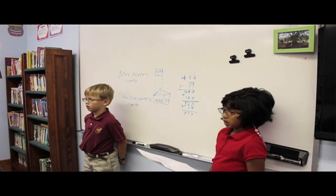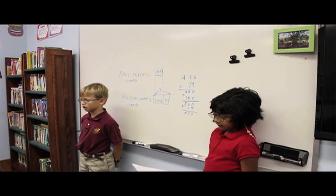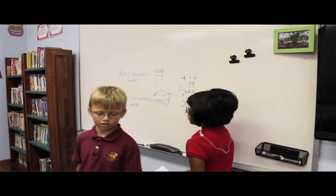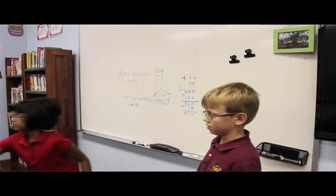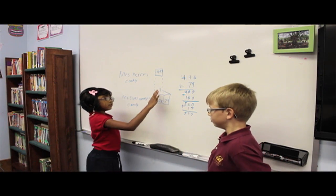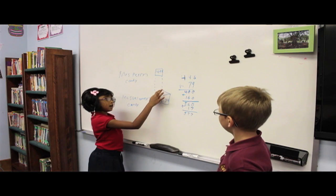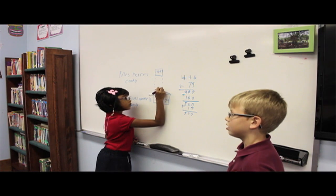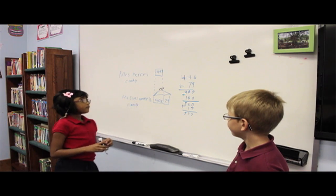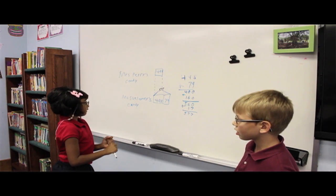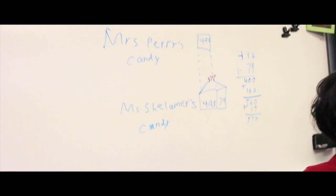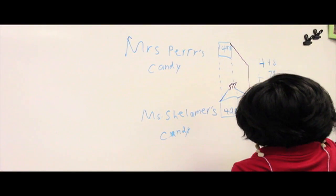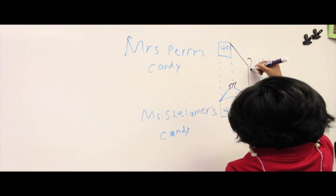Now let's ask another question. How many pieces of candy do they have all together? Now we know how much Mrs. Shalmar has, 577. So we put it on top of her box. Since we want to know how much Mrs. Perry and Mrs. Shalmar has all together, we put the question mark on the side.